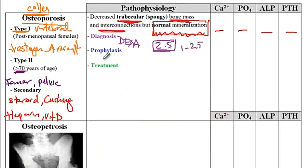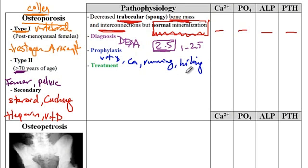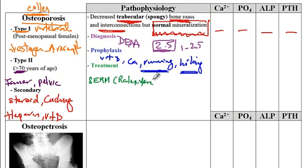For prophylactic treatment, you can supply patients with vitamin D, calcium, as well as weight-bearing exercises like running and hiking. Biking and swimming are not weight-bearing and will not help with osteoporosis. For treatment, medications include selective estrogen receptor modulators like raloxifene, which act as estrogen agonists in the bone and interfere with activation of osteoclasts, resulting in less resorption of bone.